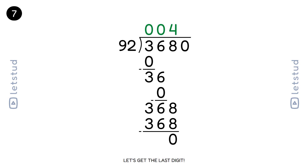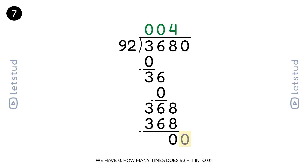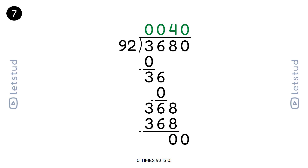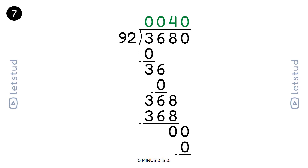Let's get the last digit. We have a remainder of 0 and bring down the 0 to make 0. 92 fits into 0 zero times. 0 times 92 is 0. 0 minus 0 is 0.